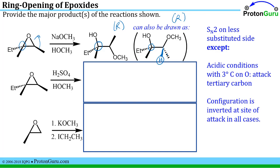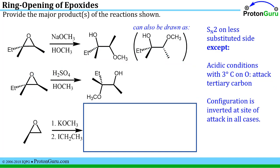In the second problem on this slide we have a strong acid, so we look for whether there's a tertiary carbon — and here there is one. This is one of those exceptions: usually you attack the less substituted side, but here the nucleophile attacks the more substituted, tertiary carbon. Under acidic conditions the oxygen is already protonated, and the nucleophile loses its proton as it attacks, opening the epoxide ring. That leads to inversion of configuration at the tertiary carbon, while the carbon on the right retains its configuration since it was not attacked.